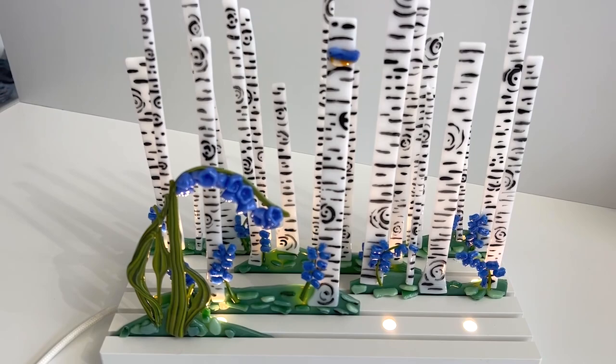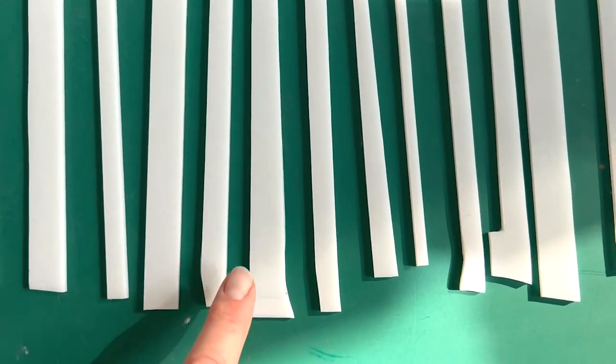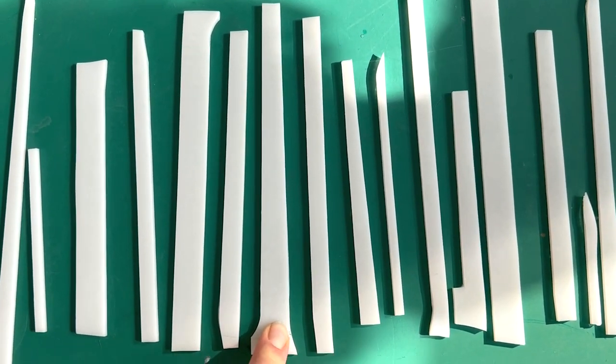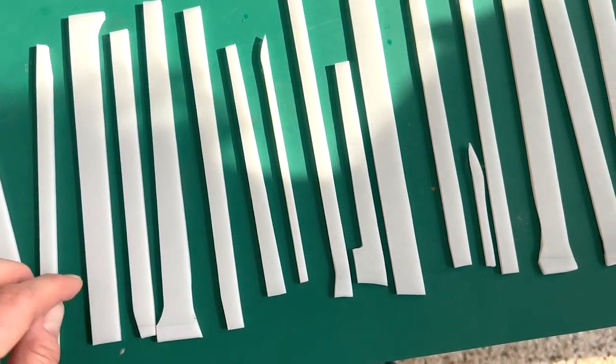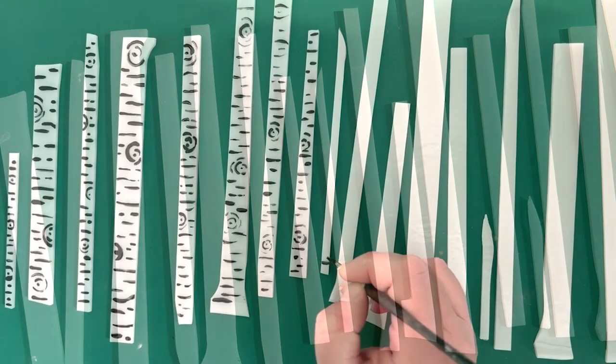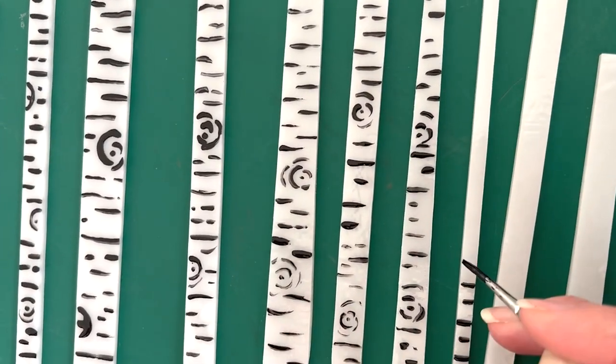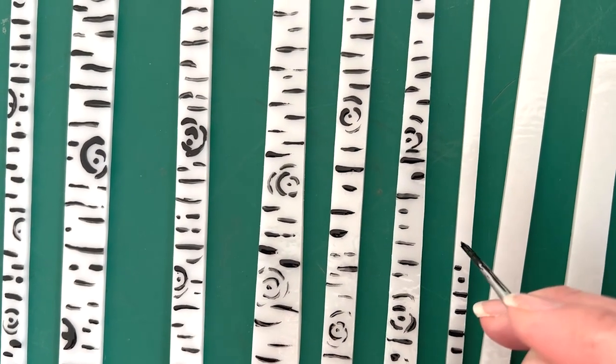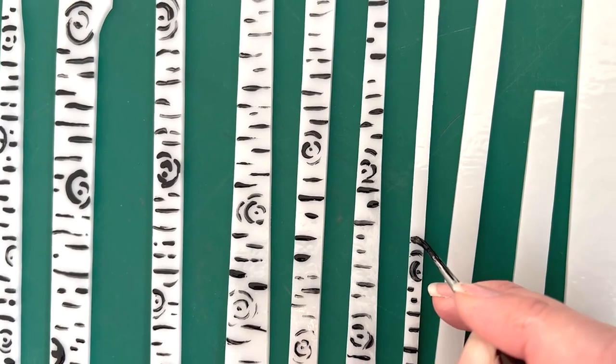So today I'm going to show you how to make this. I've cut a load of pieces of white, this is 113 white, and now I'm just going to decorate them so they look like silver birches with black enamel. I'm just painting little marks on the white to look like tree trunks. Mostly it's just lines but you can just do little circles like that as well.